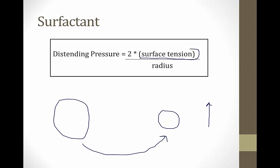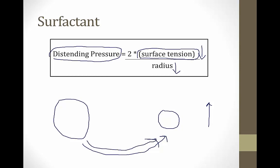Surfactant changes the surface tension in the law of Laplace equation. As the radius falls during exhalation and alveoli shrink, the surface tension also falls, offsetting the change in distending pressure. As the alveoli shrink, surfactant molecules get closer together, increasing surfactant concentration, which lowers surface tension — so the two effects offset each other.